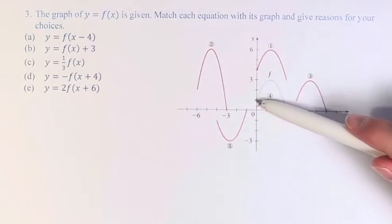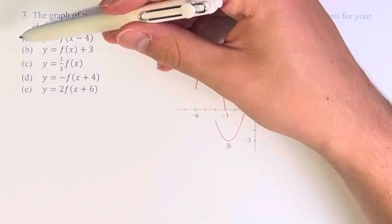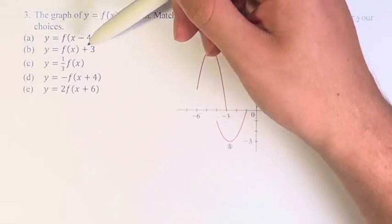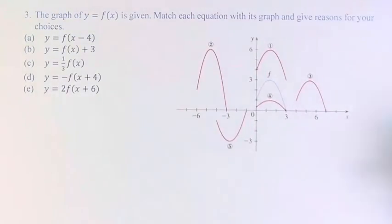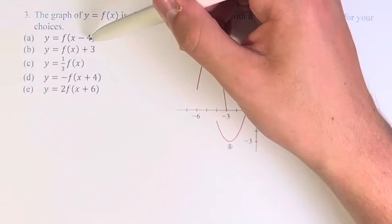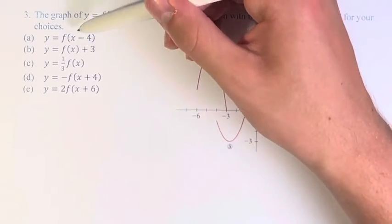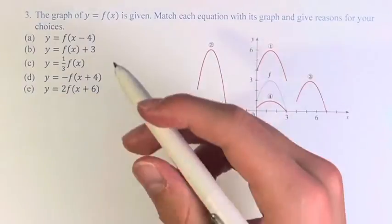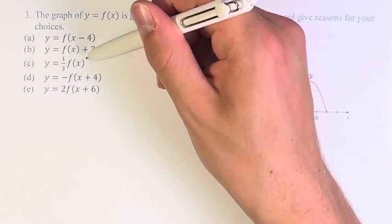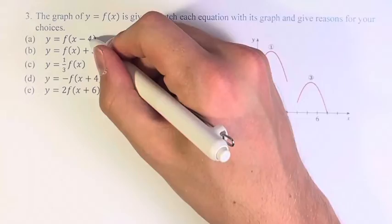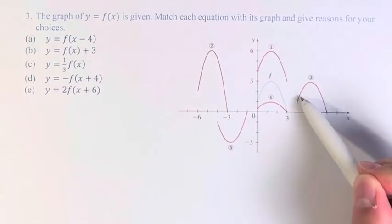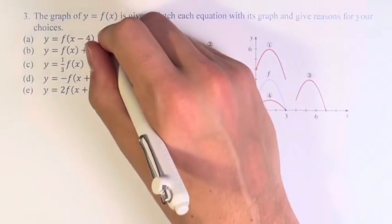So we have in blue here the function f. For a, we have y equals f of x minus 4. This means that we are shifting 4 units to the right, since the subtraction is done within the actual function and not outside of it. So this is to the right 4 units, which we see is matched right here by function 3.